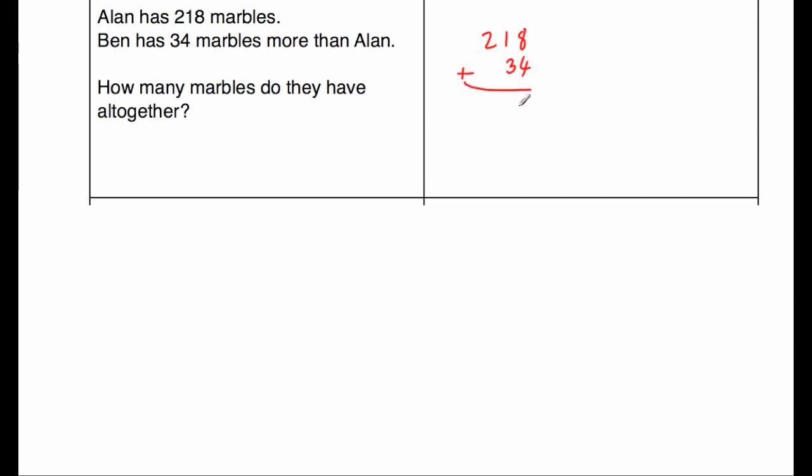8 plus 4 is equal to 12, so put the 2 down and carry a 1. 1 plus 3 is 4, plus 1 is 5. And then 2 plus 0 is 2. So that means Ben has 252 marbles. Now we need to find out how many marbles they have altogether, so we will add together the 252 and the 218. And when we do that, we get 2 plus 8 is equal to 10, so put the 0 down and carry a 1. 5 plus 1 plus 1 is 7, and 2 plus 2 is equal to 4. So altogether, they have 470 marbles.